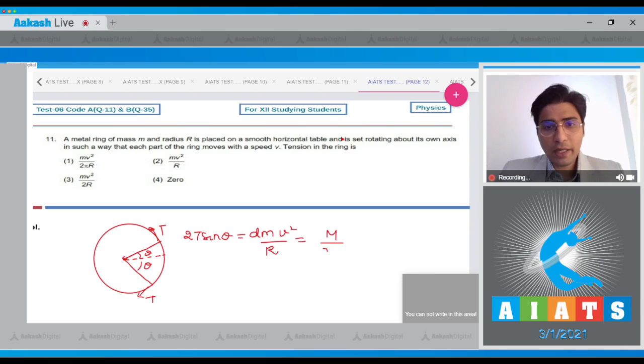Now, dm can be replaced by m by 2 pi r into 2 theta into r from the unitary method, multiplying by v square by r. So, this r and r will get cancelled, 2 and 2 will get cancelled, and on solving we get a value of t to be equal to m v square by 2 pi r.